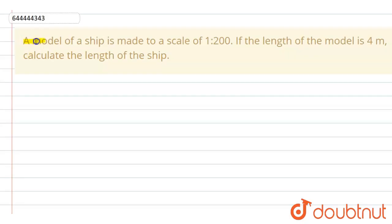The question is: a model of a ship is made to a scale of 1 ratio 200. If the length of the model is 4 meter, calculate the length of the ship. In this question, we have been given scale is 1 ratio 200.